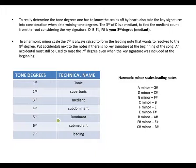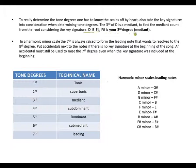To really determine the note degrees, one has to know the scales off by heart. Also take the key signature into consideration when determining tone degrees. For example, the third of D is the mediant. To find the mediant, count from the root considering the key signature: D, E, F-sharp — F-sharp is your third degree, which is your mediant.